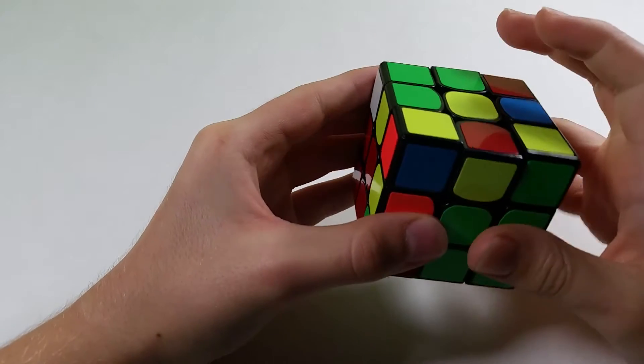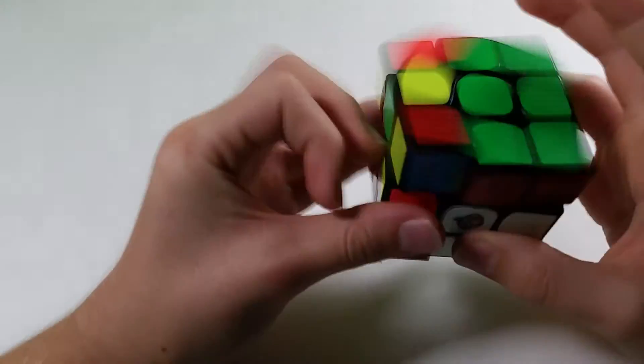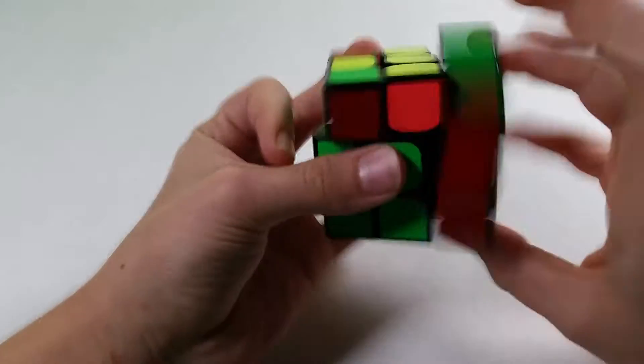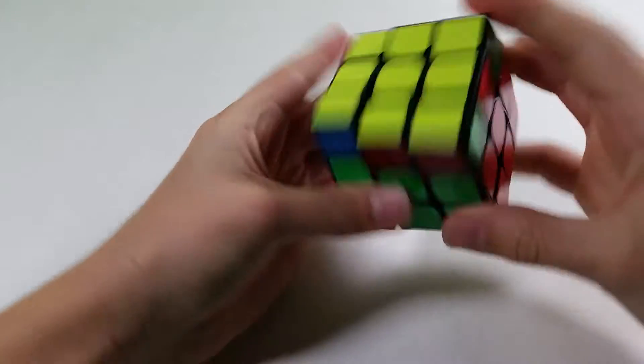Now I have this pair here, and in order to avoid a dot case, I will insert it with a lefty sledge. Then we just have OLL and then PLL.